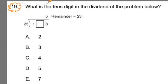Alright, here we go. Number 19. What is the tens digit in the dividend of the problem below? And they give us this problem. It has a bunch of components. The dividend refers to this number here that's being divided by the 25. So whatever number this is, we usually read it as this number divided by 25, and it says here that 25 goes into it evenly five times and has a remainder of 23. We've got to find that unknown digit.